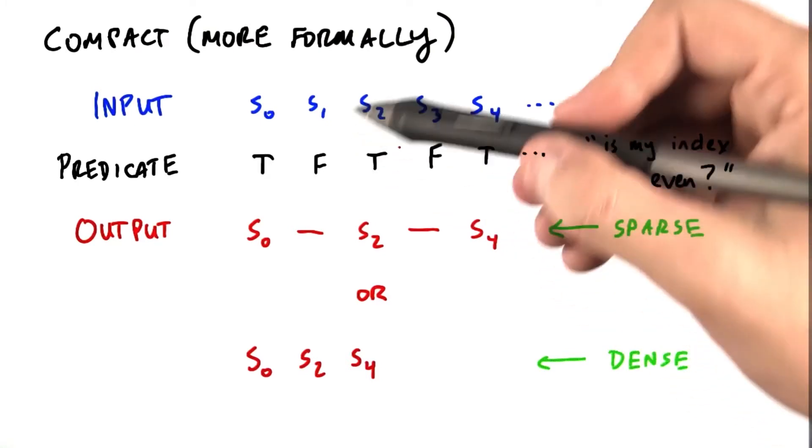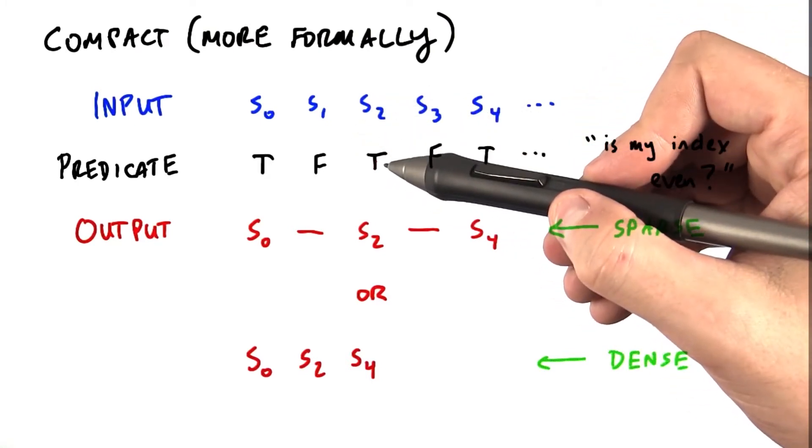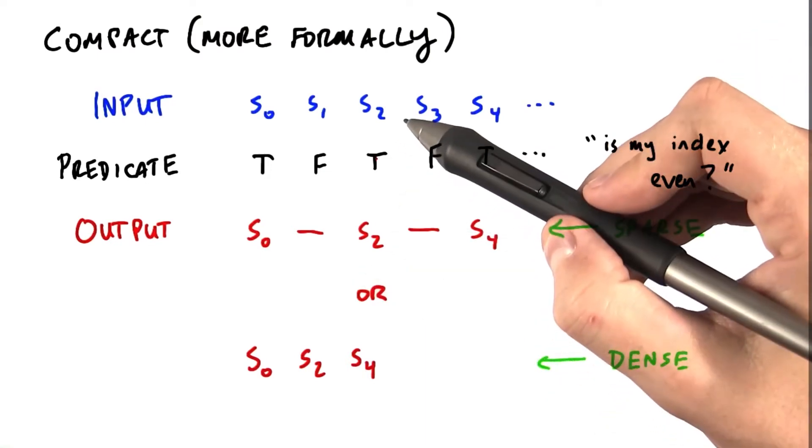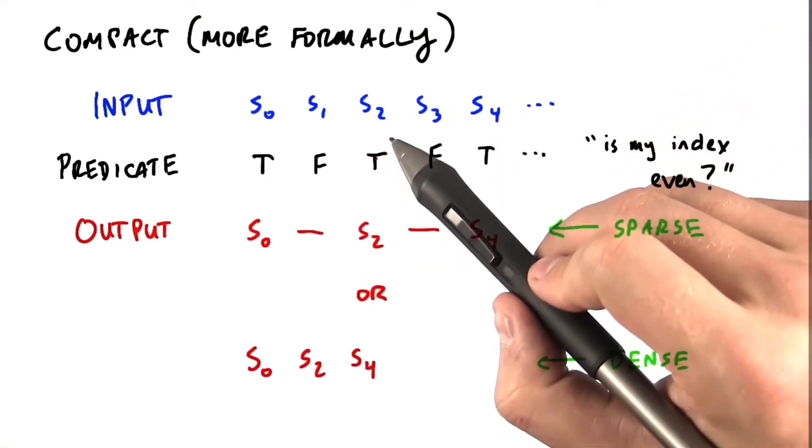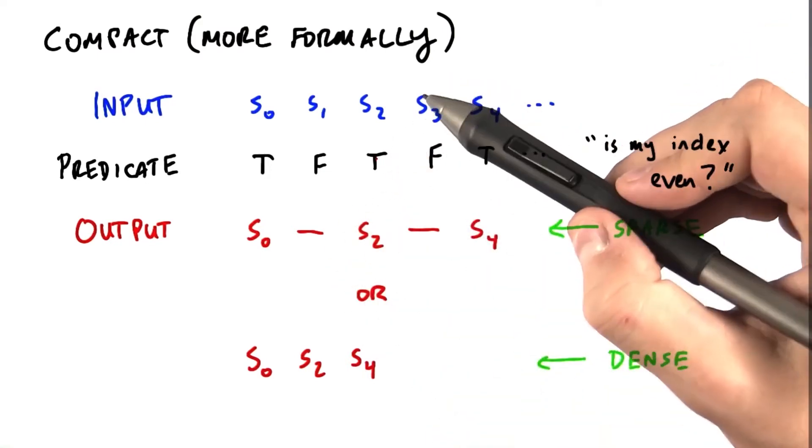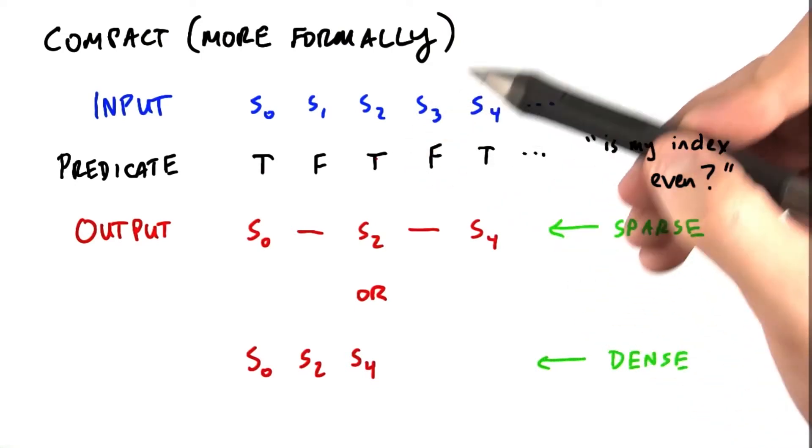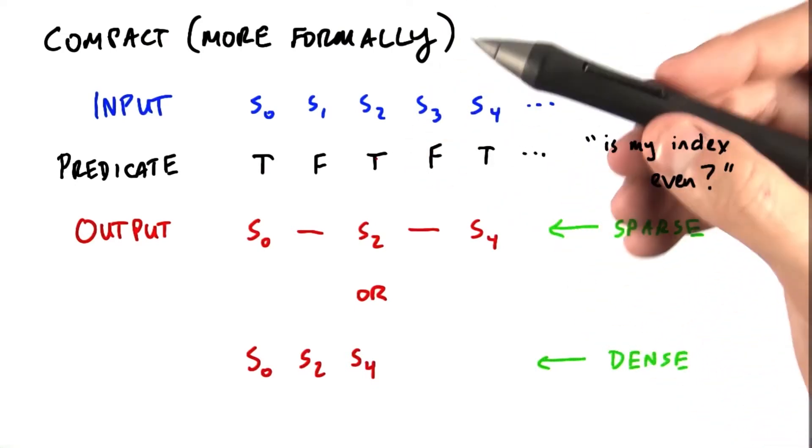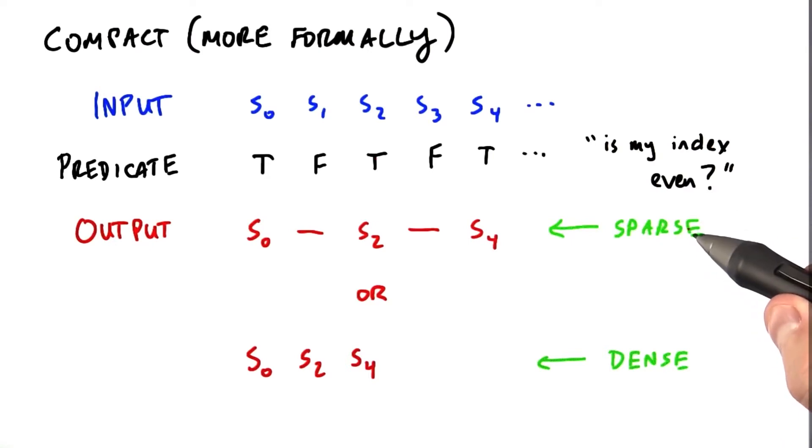We want to calculate S filtered by this predicate. So we only keep those objects in S for which the predicate is true. What form do we want the output of this filter, of this compact operation to be? We have a choice of how to do it.